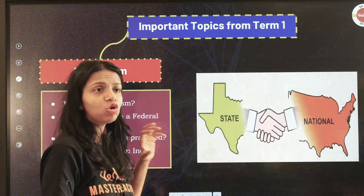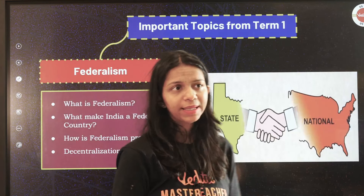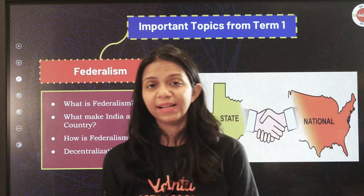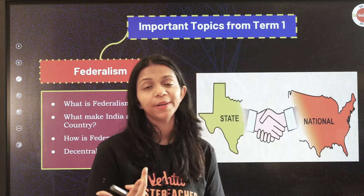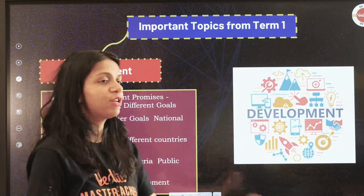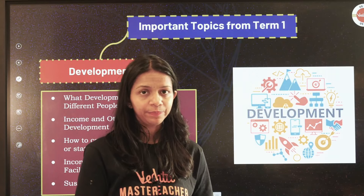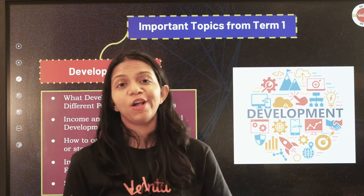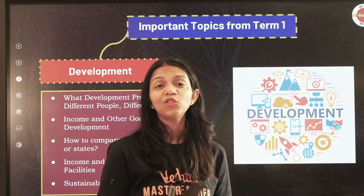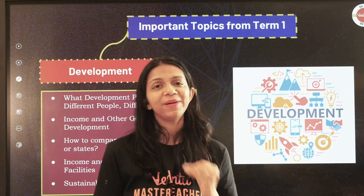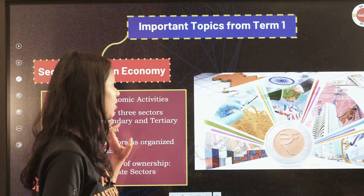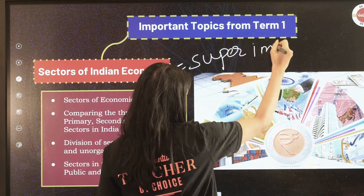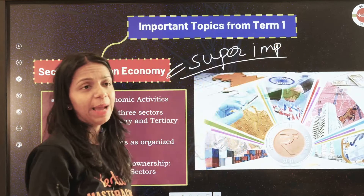For Federalism, direct questions come such as: what makes India a federal country, what are the features of federalism, and features of decentralization — you get direct 2 to 3 marker questions here. For Economics, if you study conceptually from the start of the year and understand the questions from within each chapter, you will never have problems. Development and Sectors of the Indian Economy are super important chapters to understand.